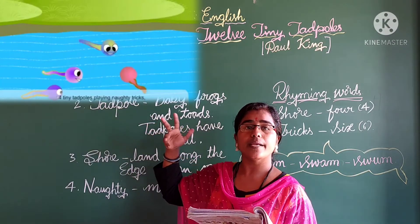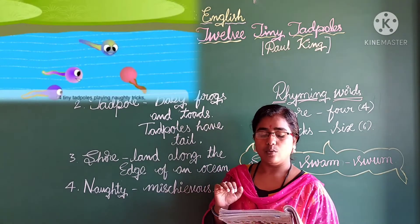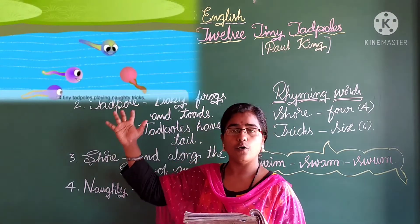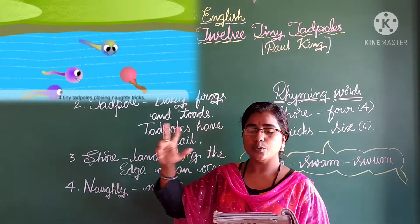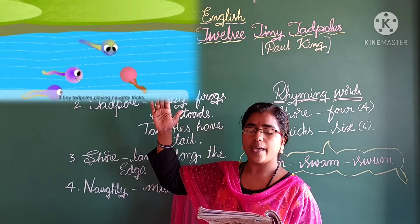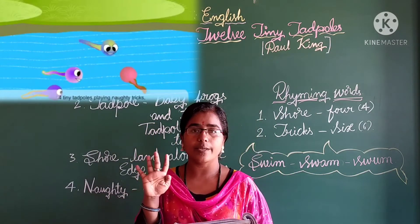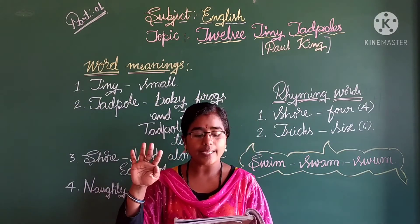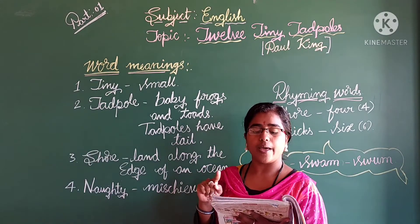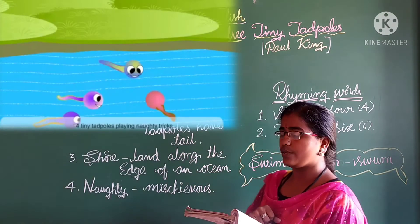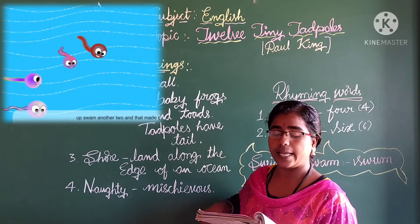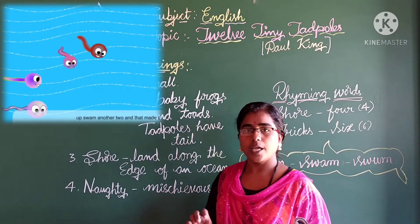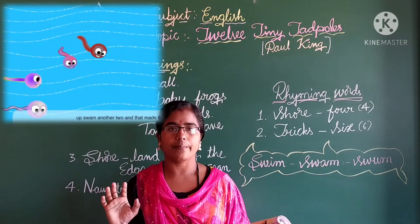Two tiny tadpoles were swimming near the shore. Up swam another two - another two tadpoles joined with them. Now how many did they become? That made four. Two plus two is four. Now they became four. Four tiny tadpoles are playing naughty tricks. Up swam another two and that made six.